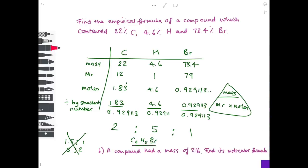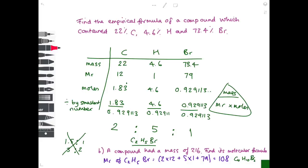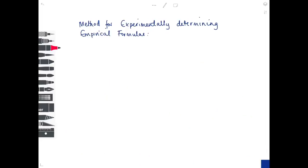To find the molecular formula from the empirical formula: if a compound has a mass of 216, calculate the Mr of the empirical formula C₂H₅Br — that's (2×12) + (5×1) + 79 = 108. Since 216 ÷ 108 = 2, the molecular formula is twice the empirical formula: C₄H₁₀Br₂. If the Mr had equalled 216, the molecular formula would be the same as the empirical formula.